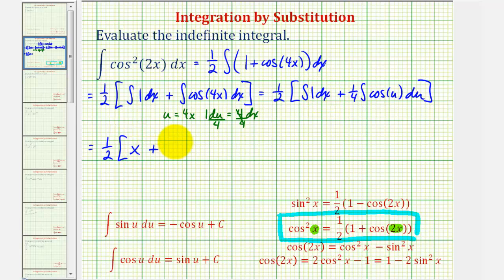And then we have plus one-fourth times the integral of cosine u, which is equal to sine u plus c, but remember, u is 4x, so we have sine 4x plus c.